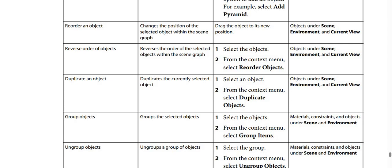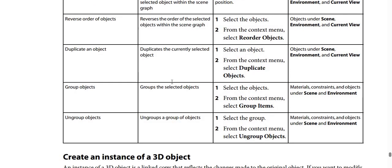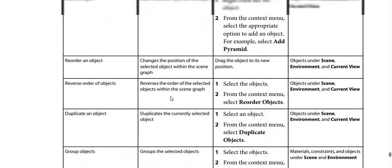For the reorder an object interaction, the description is: changes the position of the selected object within the scene graph. To perform it, select the object, then from the context menu select Reorder Objects. Not available for objects under scene environment and current view.